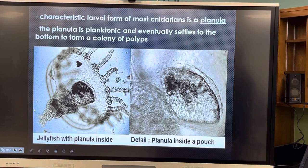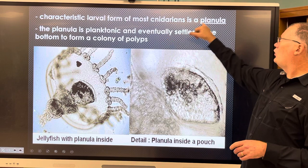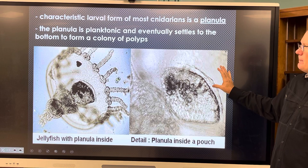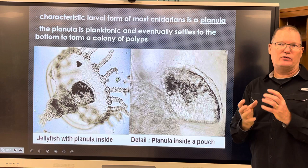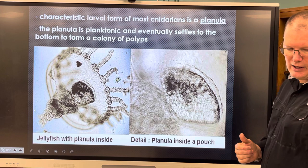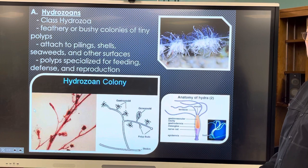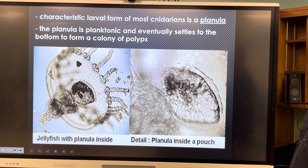Cnidarians have a characteristic larval form called a planula. The planula is planktonic and eventually settles to the bottom to form a colony of polyps. When these are babies they float around planktonically, then settle and grow into colonial hydrozoans — but they have to connect to something to mature and feed.